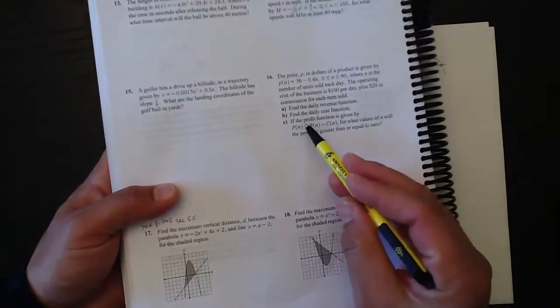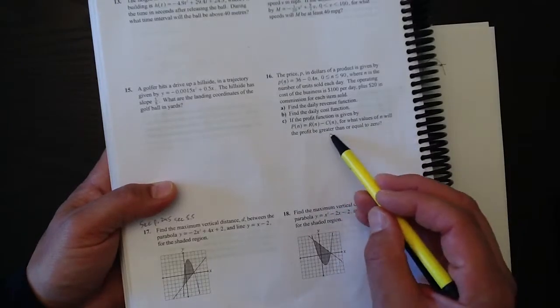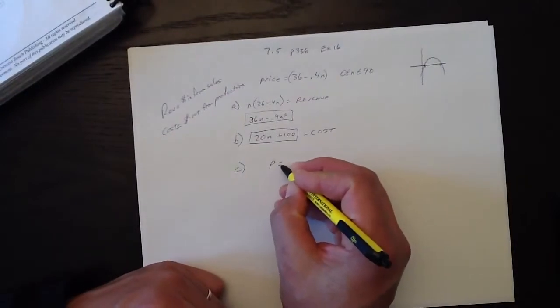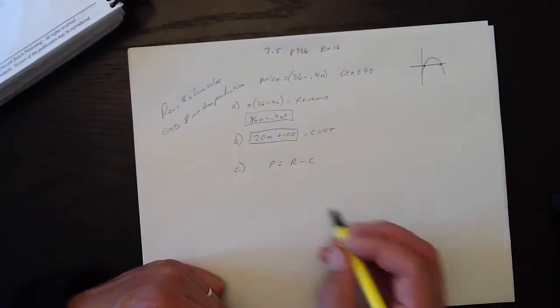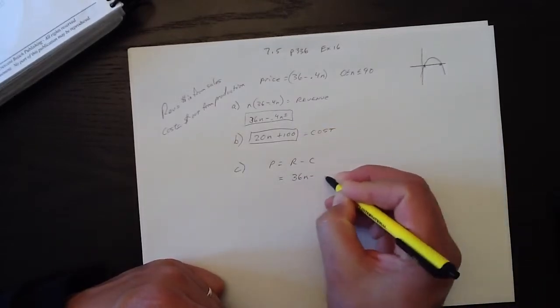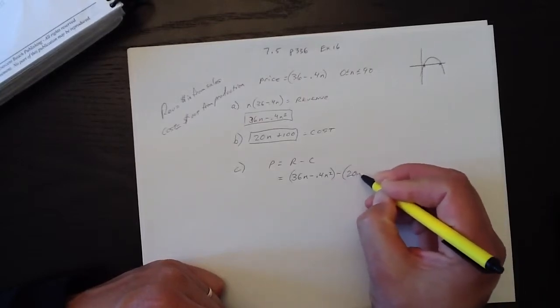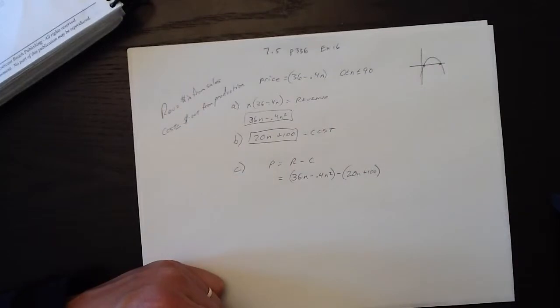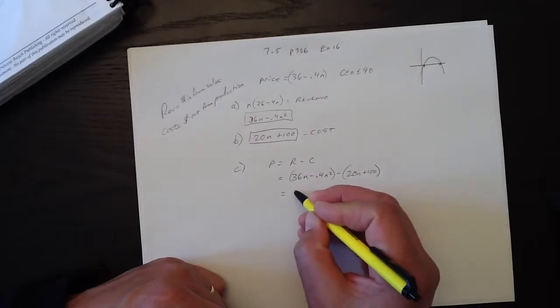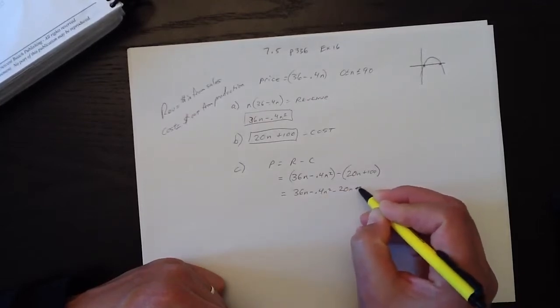Part c, two-part question. It says, if the profit function is given by profit equals revenue minus cost, for what values of n will the profit be greater than or equal to zero? Let's write this profit thing out. Instead of profit equals revenue minus cost, I'm going to put in this for revenue and this for cost. 36n minus 0.4n squared, the revenue, minus the cost, which is 20n plus 100.